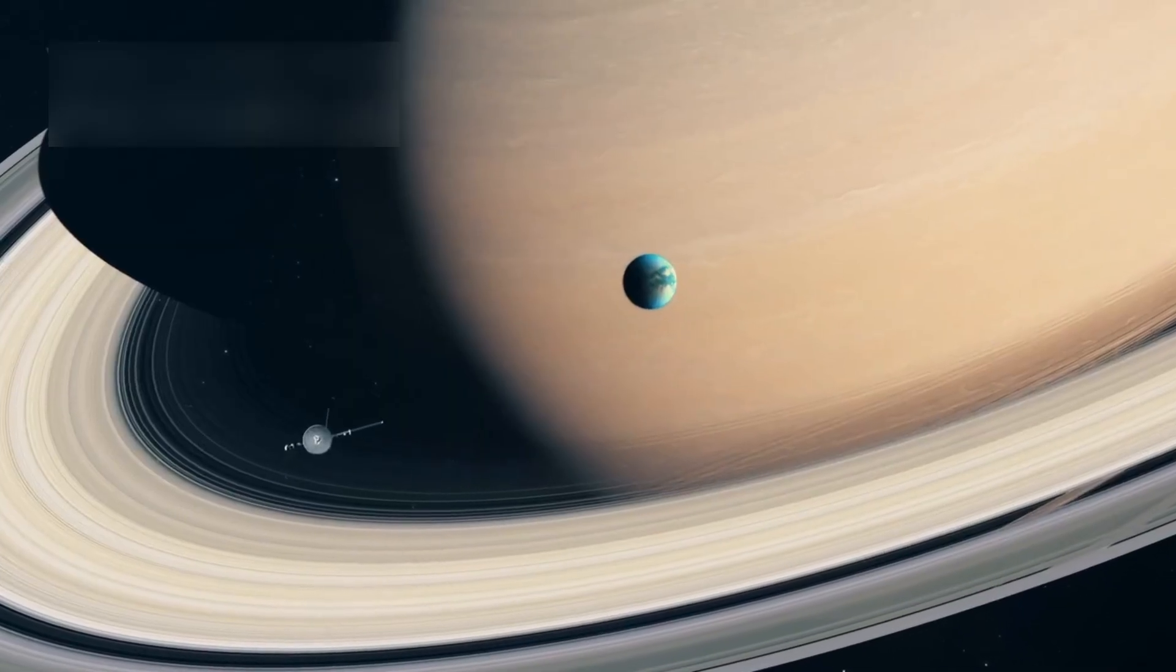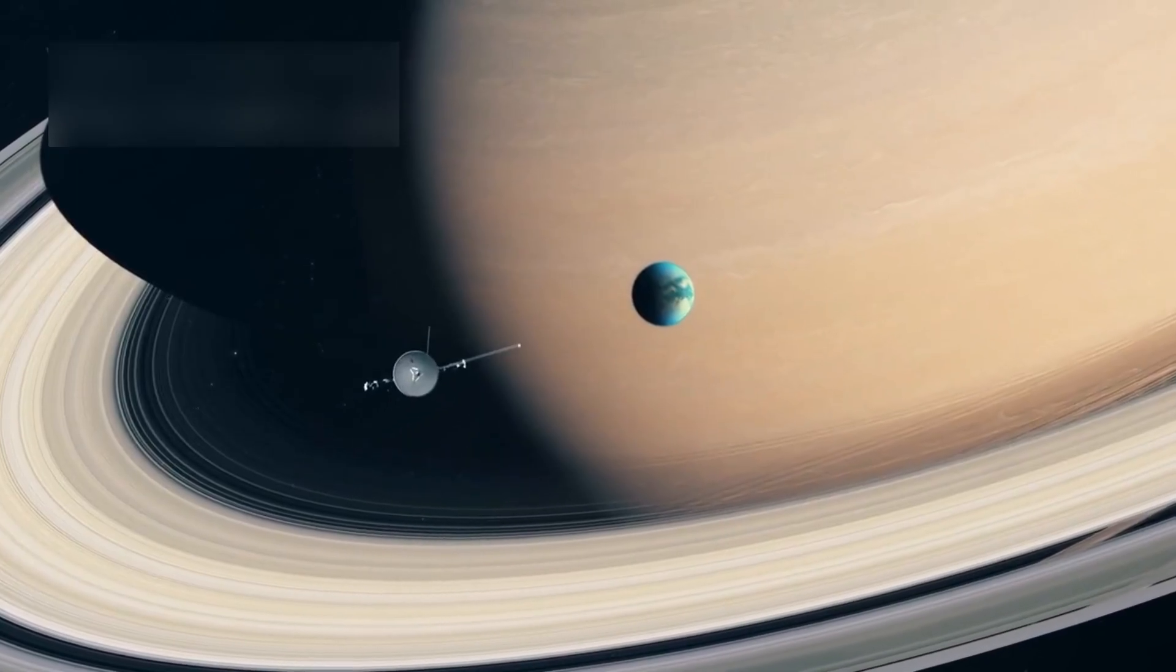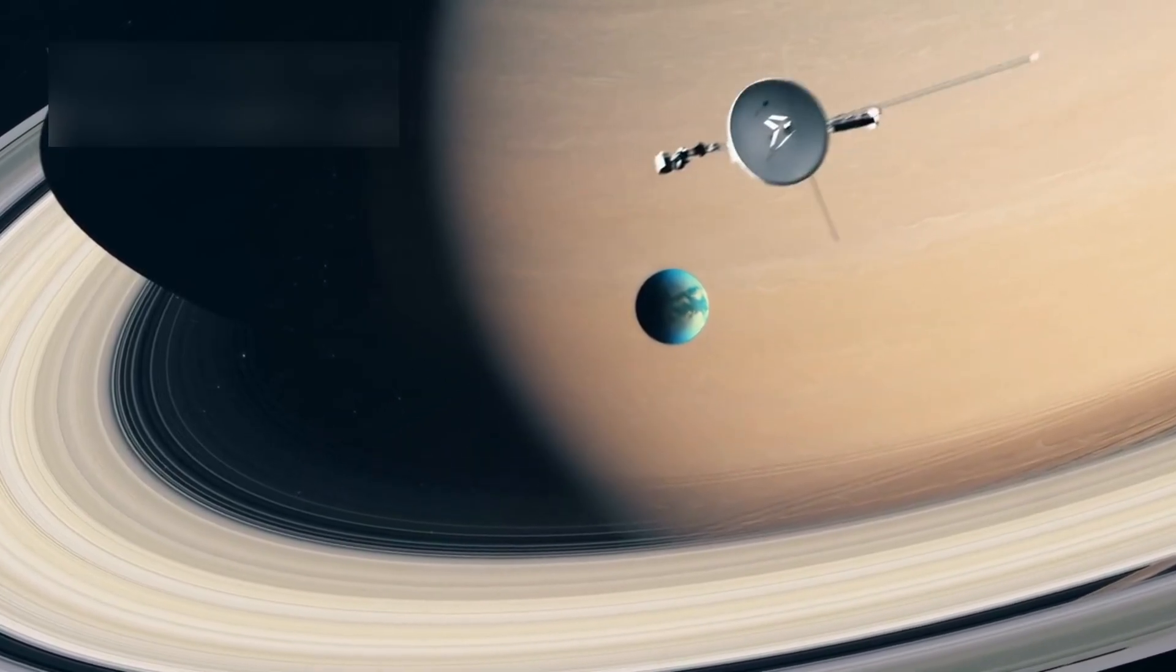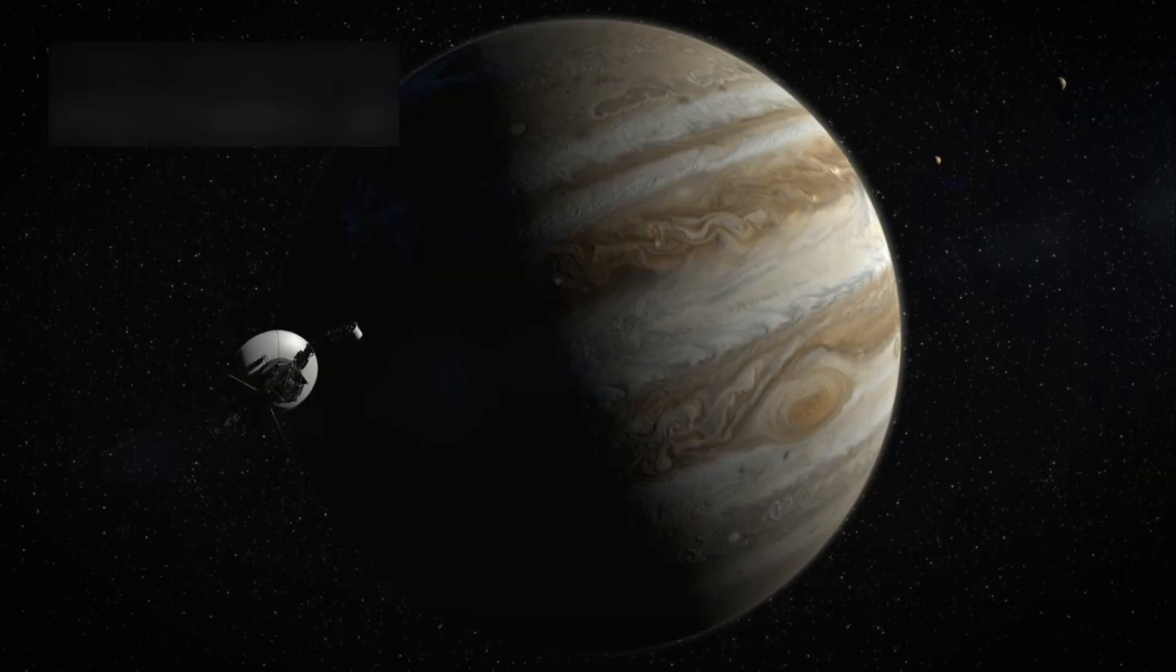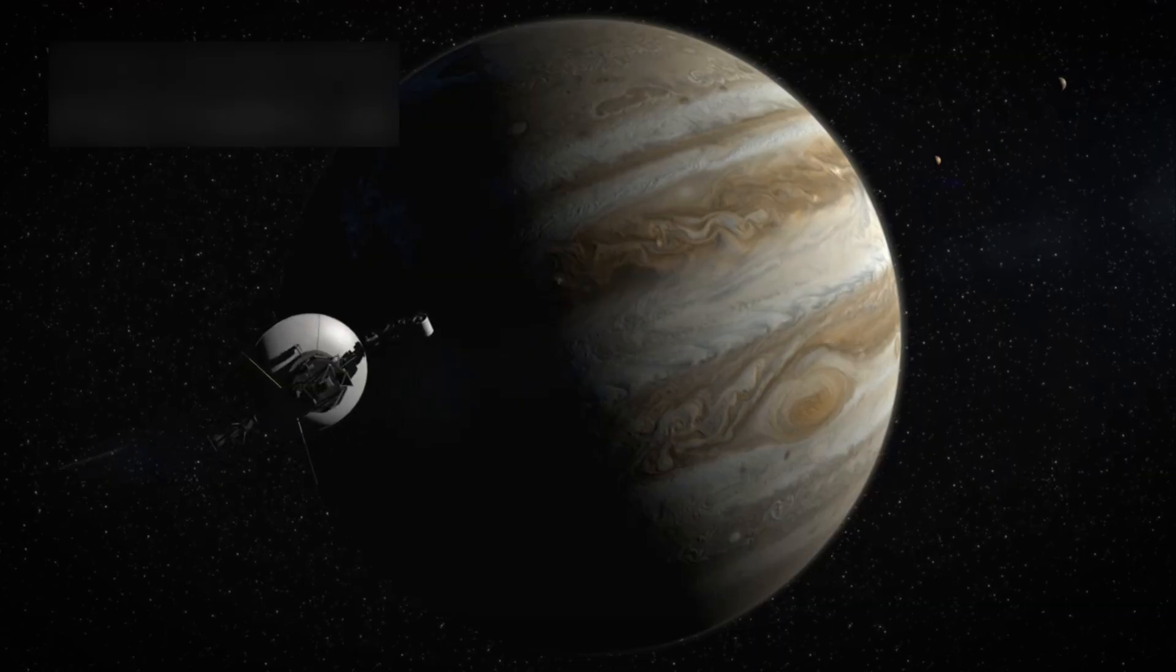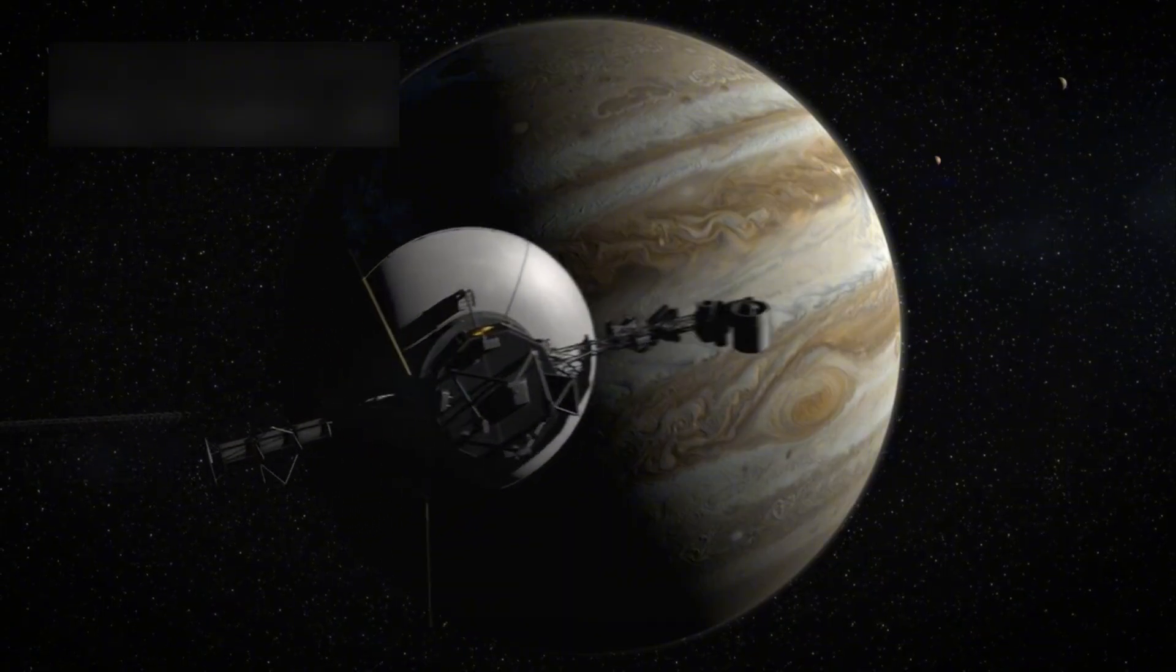The spacecraft, along with its twin Voyager 2, was designed to explore Jupiter and Saturn, two of the gas giants that dominate our solar system. The mission was meant to last just five years, but what happened next amazed even the most optimistic scientists.